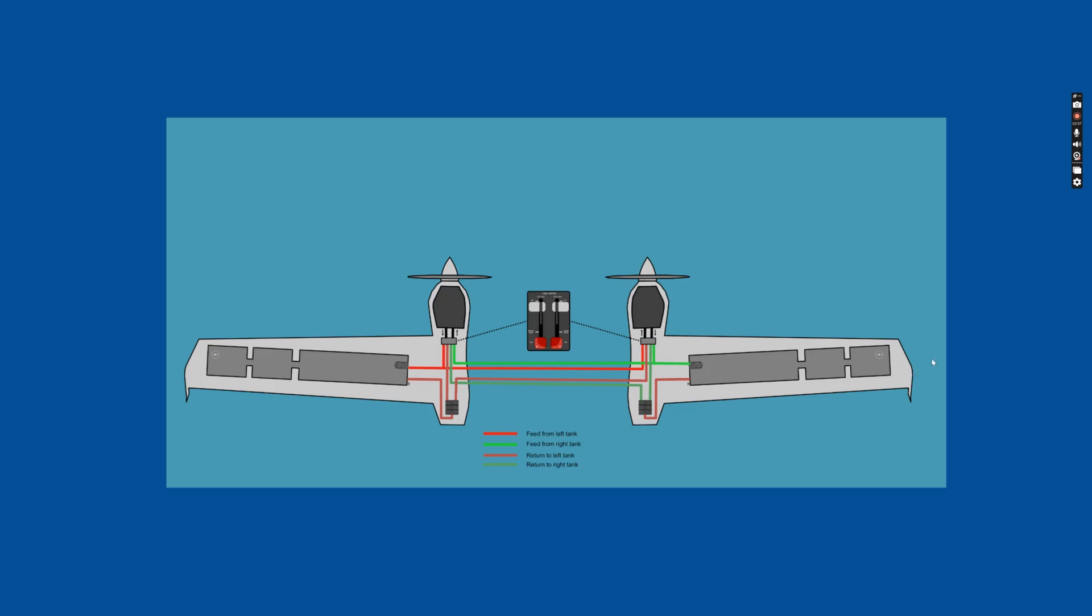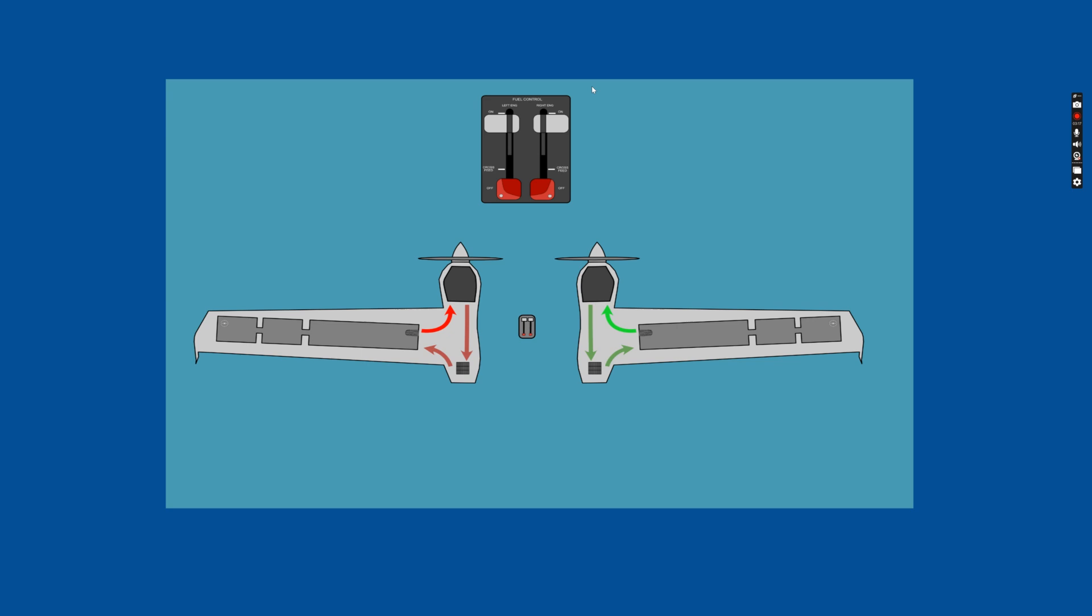So fuel normally is drawn from the wing tank, goes to the engine on that side, and then is returned to that wing tank via the fuel cooler on that side. However, each engine can also be run in the cross feed position. So let's look at a more simplified version of this fuel flow here.